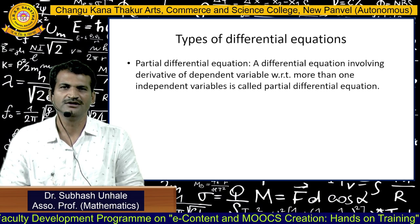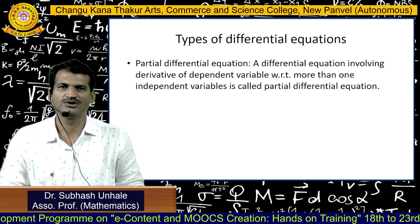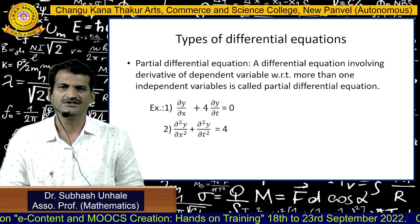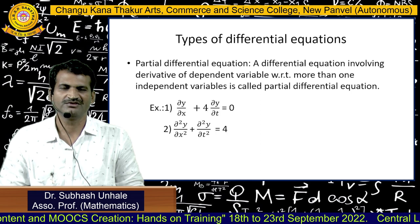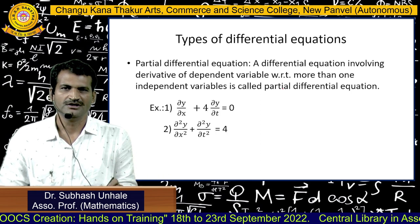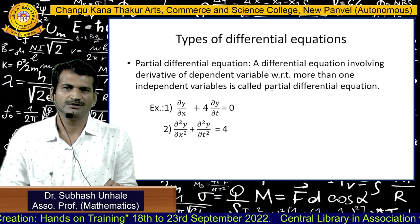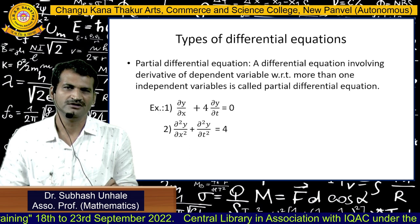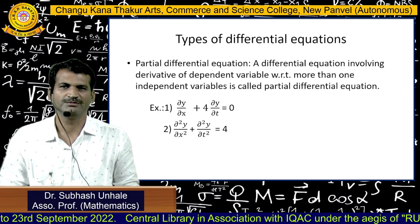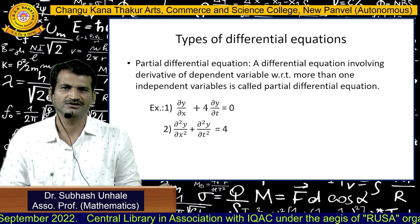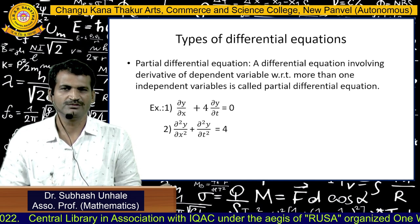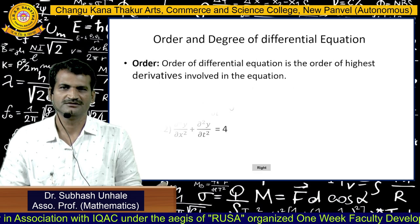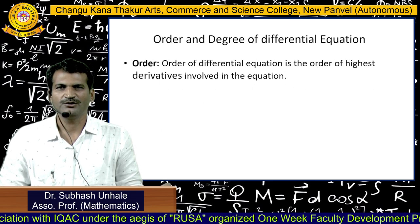A partial differential equation involves derivatives of a dependent variable with respect to more than one independent variable. For example, the derivative of y with respect to x and t means y is differentiated with respect to two independent variables. Similarly, in a second example, the derivative of y is with respect to both x and d.